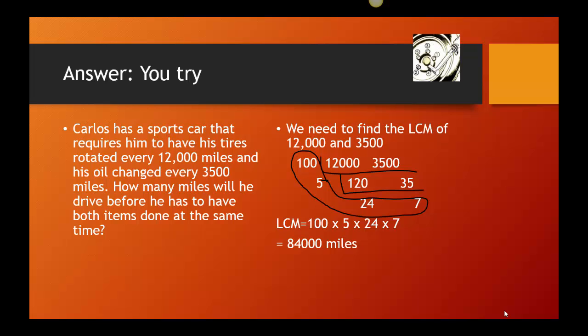So I take my two numbers, my 12,000 and my 3,500, and I'm going to divide by 100 to start. Remember, because I'm using repeated division, I'm not using primes. I can use any number that divides into both. So now I have my numbers down to 120 and 35. So I decide to divide by 5, which gives me 24 and 7. And 24 and 7 are relatively prime. They have nothing in common. So now I'm done with my repeated division, and I just need to multiply 100 times 5 times 24 times 7, which says in 84,000 miles or every 84,000 miles, he'll have to have both things done at the same time.